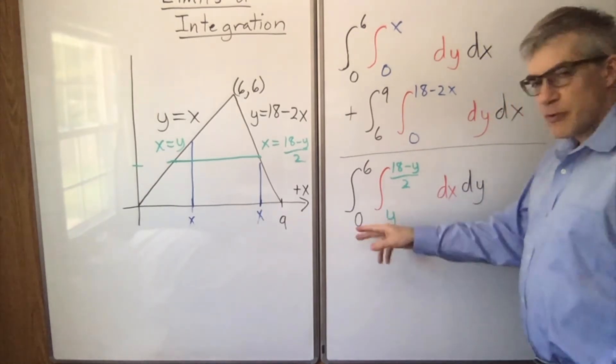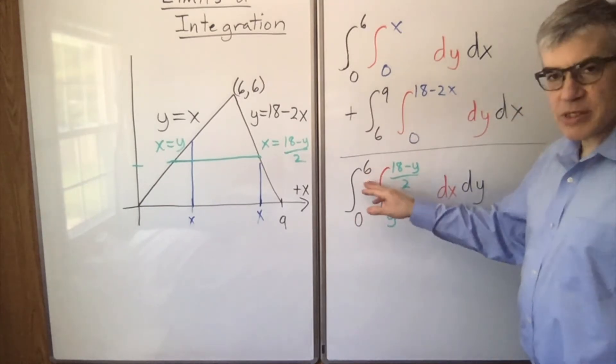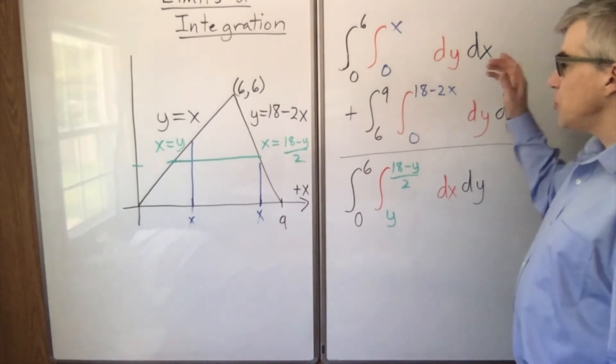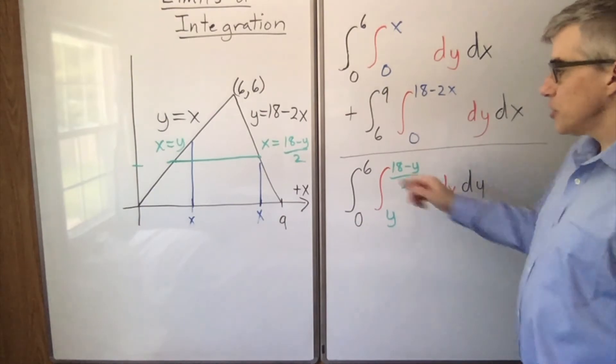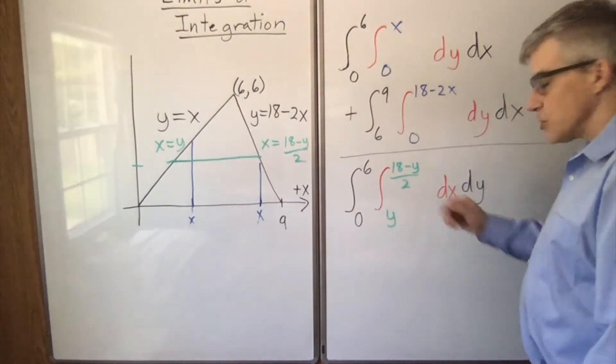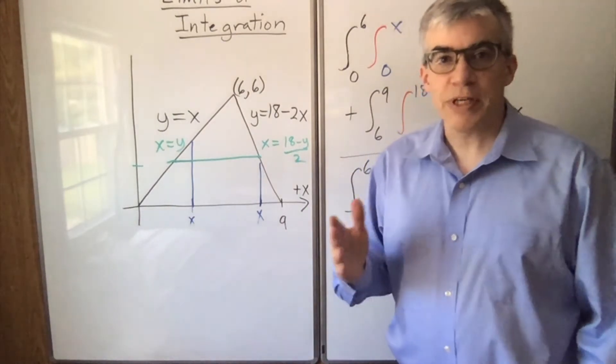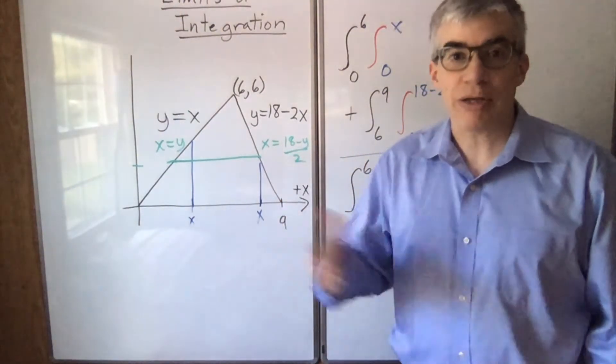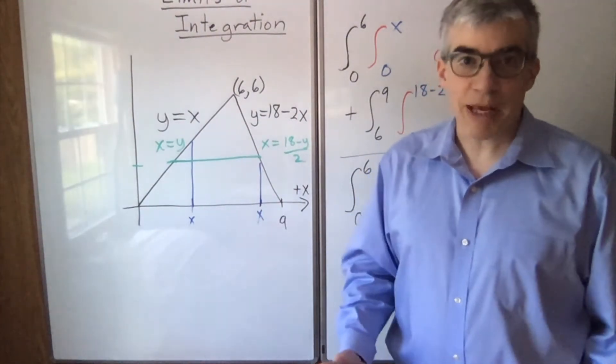Notice the outer variable can appear in the inner limits, but the outer limits have to be numbers. Also you can see that to integrate over x on the outside, you have to do two integrals, whereas to integrate over y, there's only one. So depending which way you arrange it, one of these integrals might be easier than the other, which is why it's good to know how to switch back and forth.